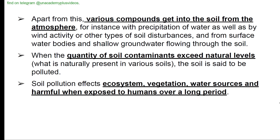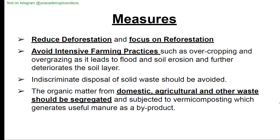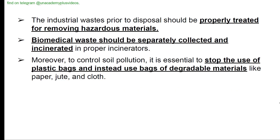Soil pollution affects ecosystems, vegetation, water resources, and is harmful to humans when exposed over a long period. Measures include: reducing deforestation and focusing on reforestation; avoiding intensive farming practices; avoiding indiscriminate disposal of solid waste; segregating organic matter from domestic and agricultural waste; properly treating industrial waste before disposal; separately collecting and incinerating biomedical waste; and stopping the use of plastic bags in favor of degradable materials like paper, jute, and cloth.